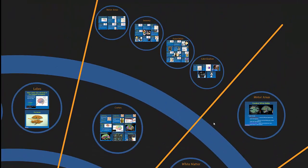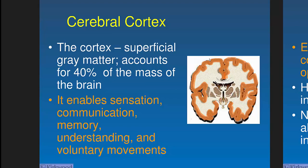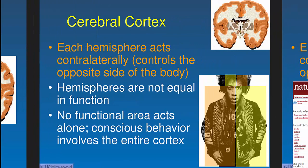We'll dig into cortex first: motor areas, sensory areas, association areas, and lateralization. The cortex is about the outer six millimeters — where sensation, communication, memory, and thinking really happen. It's about 40% of the brain's mass and is very tightly packed with cell bodies. Importantly, the brain is contralateral: the right brain controls the left body and vice versa. This matters clinically — a stroke on the left side affects the right side of the body.